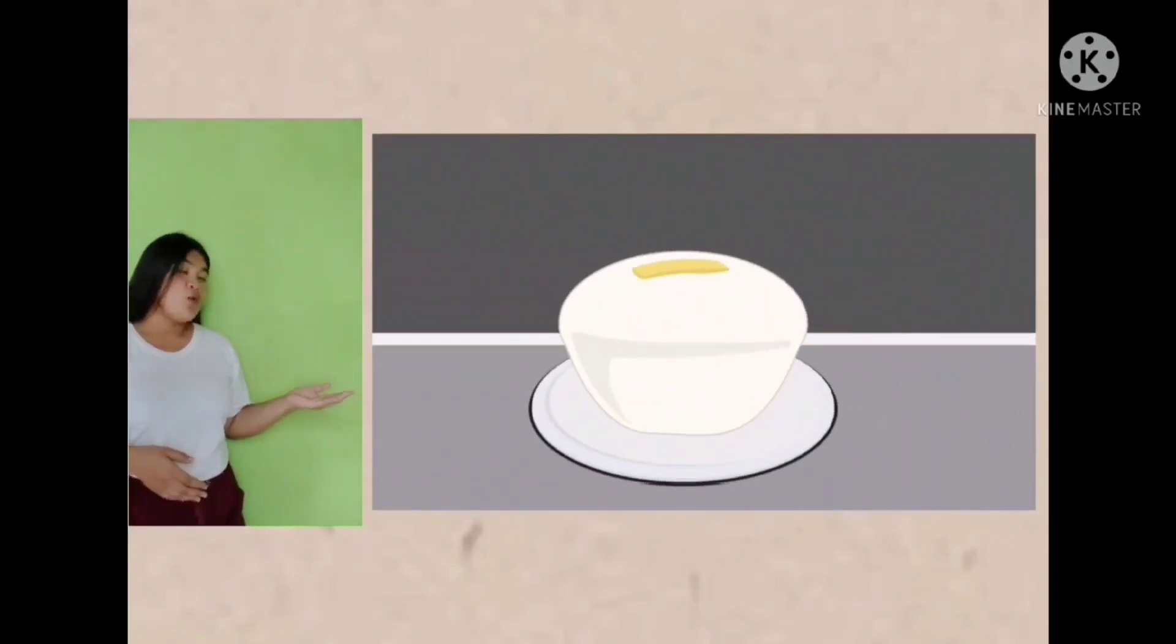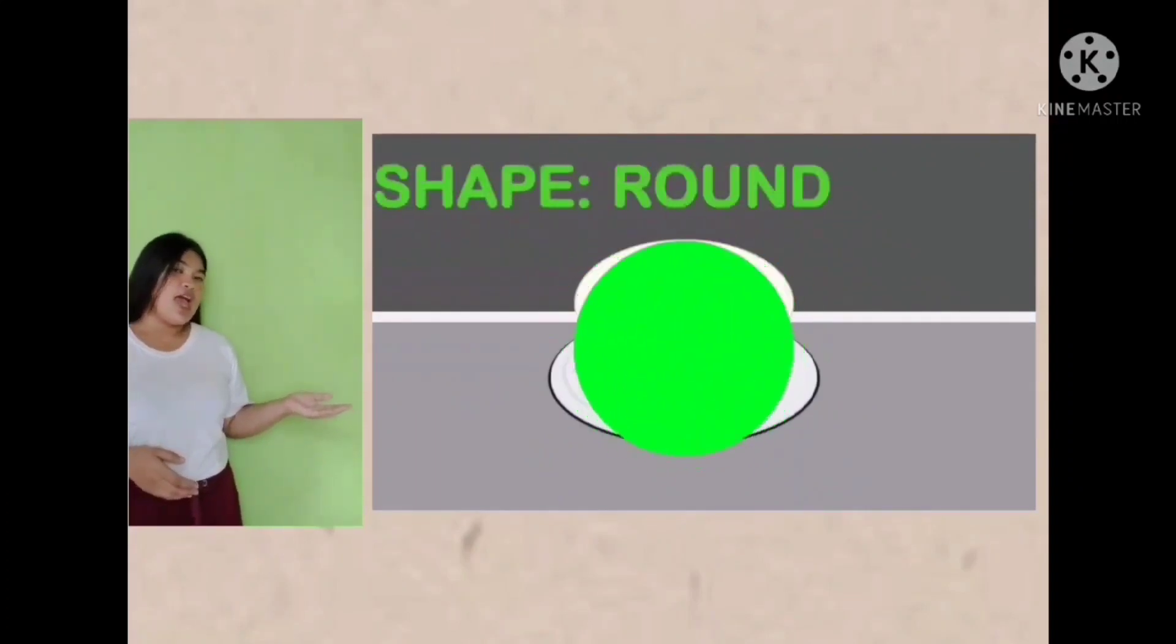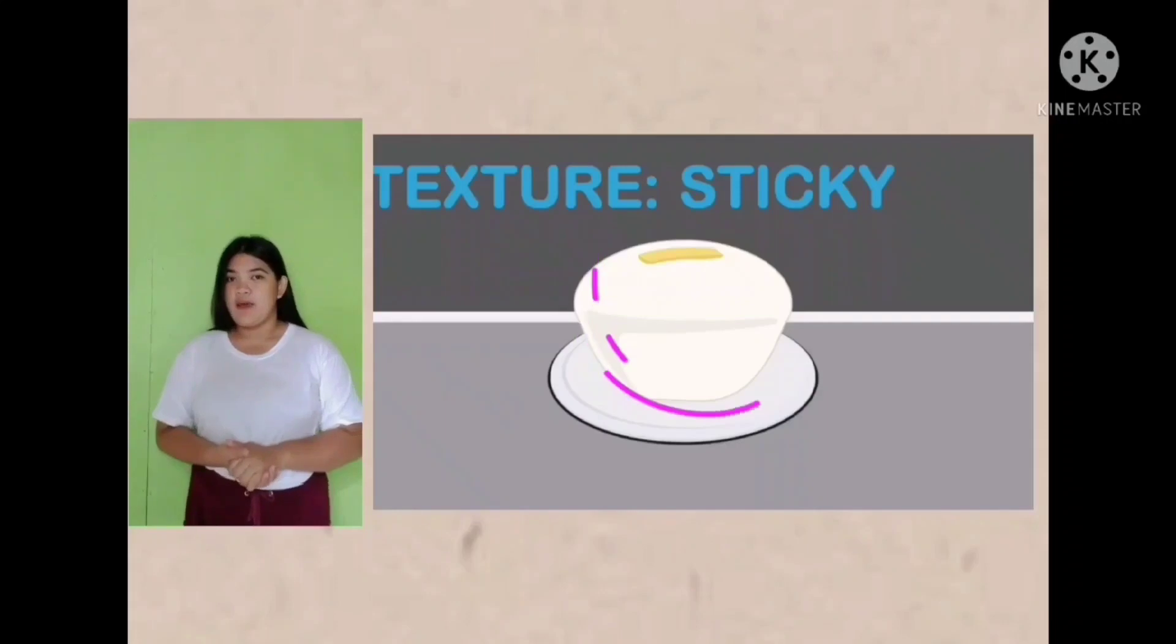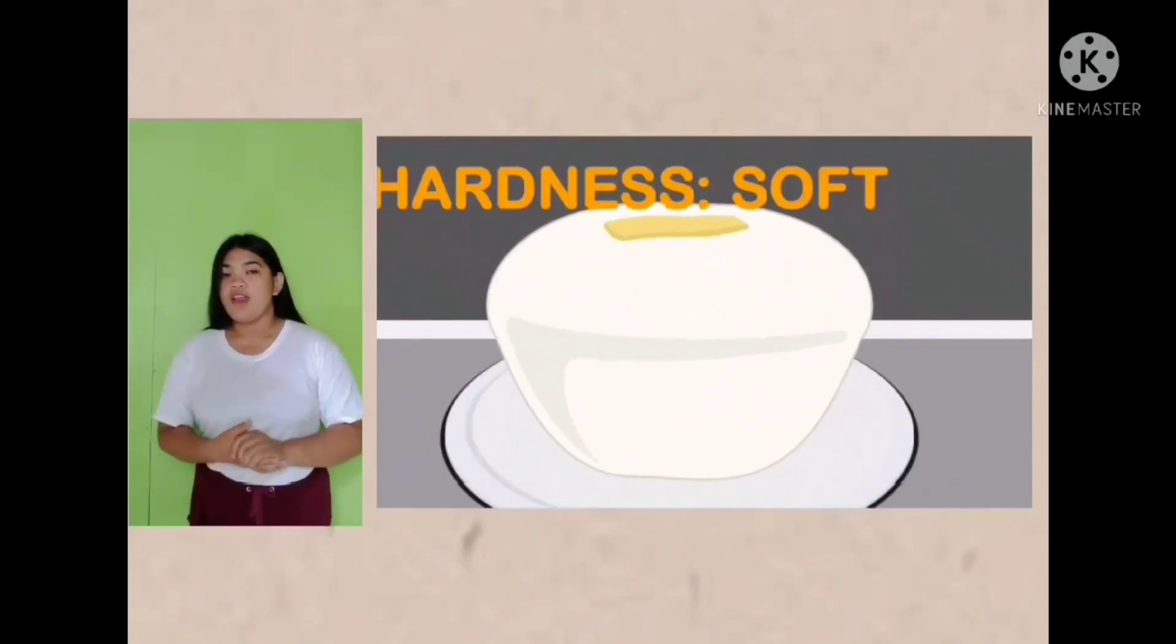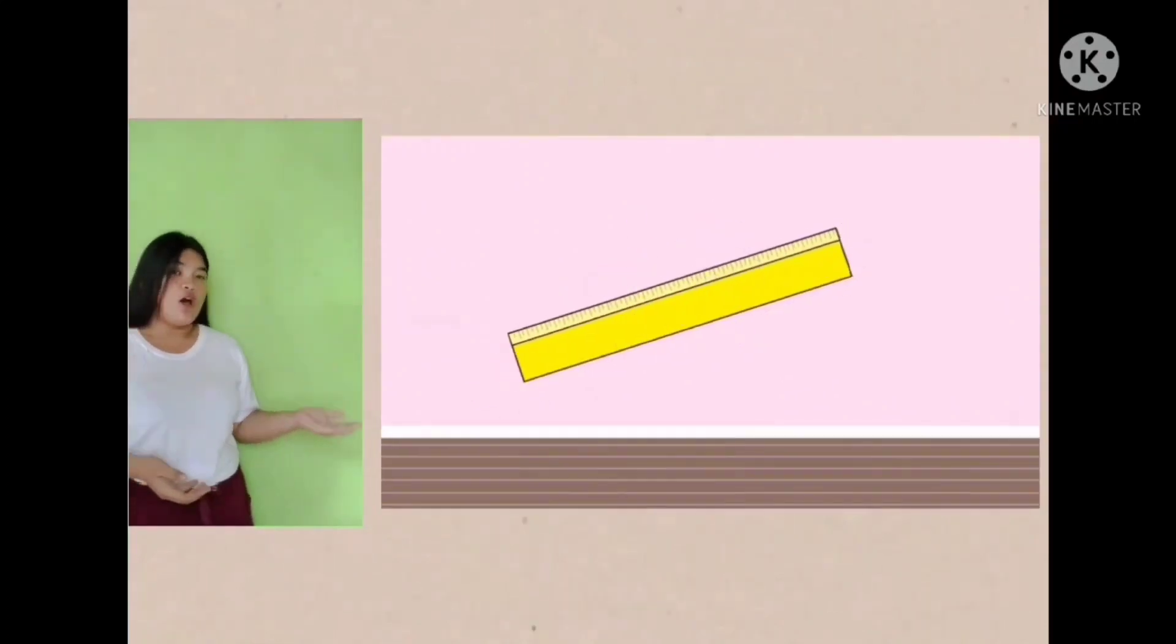Take this as an example: Puto. We can observe the color is white, it's small, and is rounded. When you touch it, it is sticky but it is soft. Another example is a ruler. It is long, yellow, and rectangular.